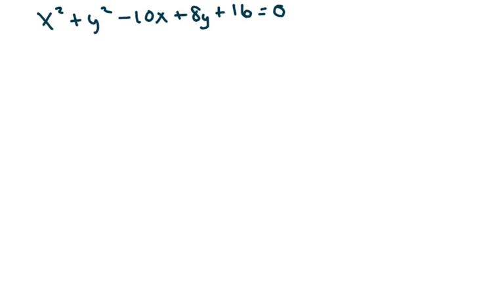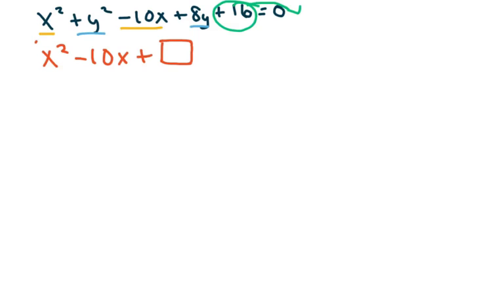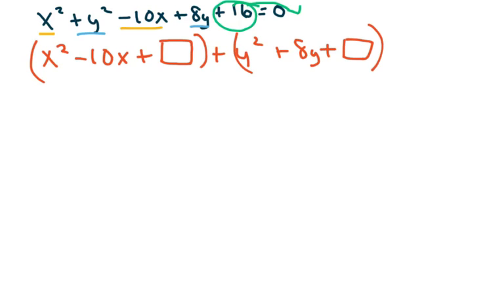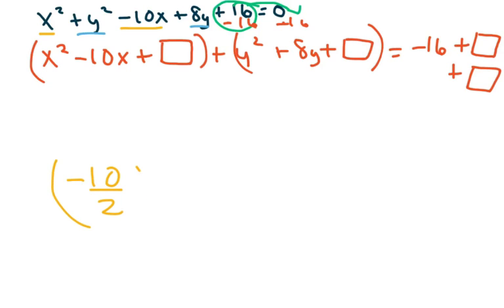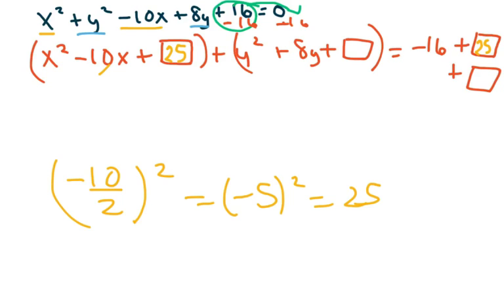In this next case the equation is a little jumbled, so I'll group my x's together, group my y's together, and move the constant to the right. I write it as x squared minus 10x plus box, plus y squared plus 8y plus box, equals 6. I subtract 16 from both sides, leaving negative 16 on the right plus my two boxes. Now completing the square: negative 10 over 2 squared gives negative 5 squared which is 25. Half of 8 is 4, squared gives 16.